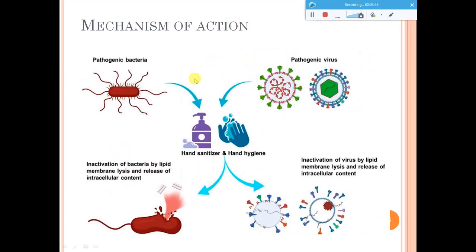Coming to the mechanism of action: hand sanitizers have the capability to kill bacteria and viruses. The sanitizer inactivates the surface or envelope of the bacteria and virus. The lipid layer in bacteria and the lipid envelope of the virus, as well as the RNA or DNA of the virus, are attacked. As a result, cell components are released, the cell dies, and it loses the capability to cause disease.